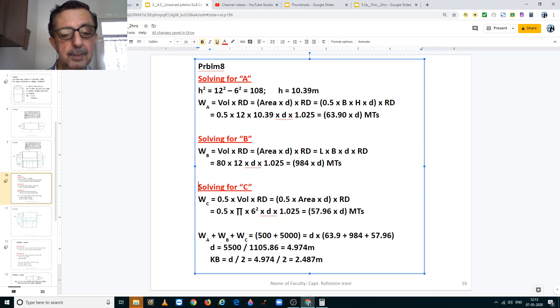Solving for the semi-circular C section, we have the displacement equal to half the volume into the relative density. Remember it is a semi-circle, so it is not the full volume, it is half the volume. And volume of a semi-circle is equal to pi r squared. So volume is equal to, in this case area into the draft into the relative density multiplied by 0.5. And area is pi r squared.